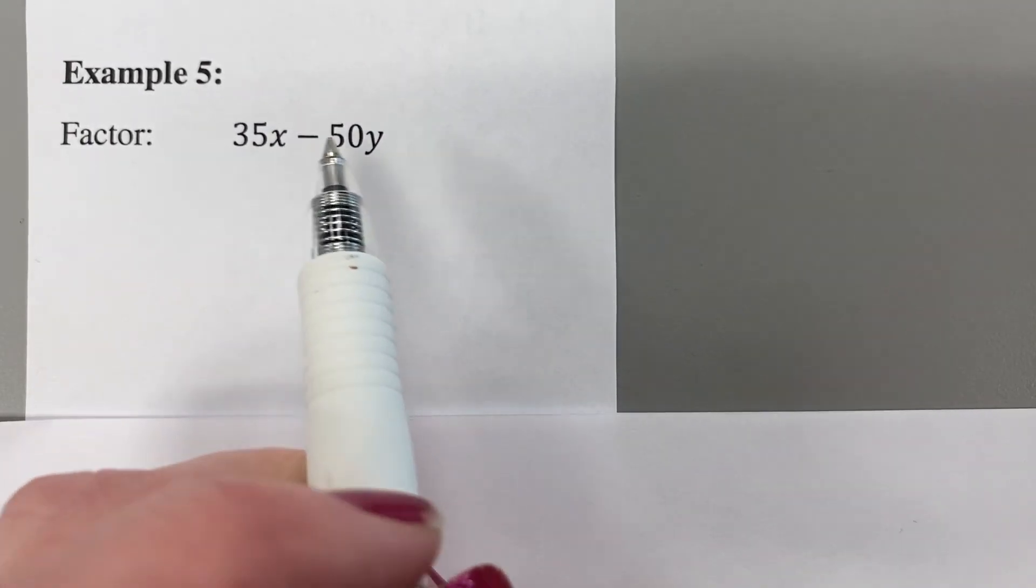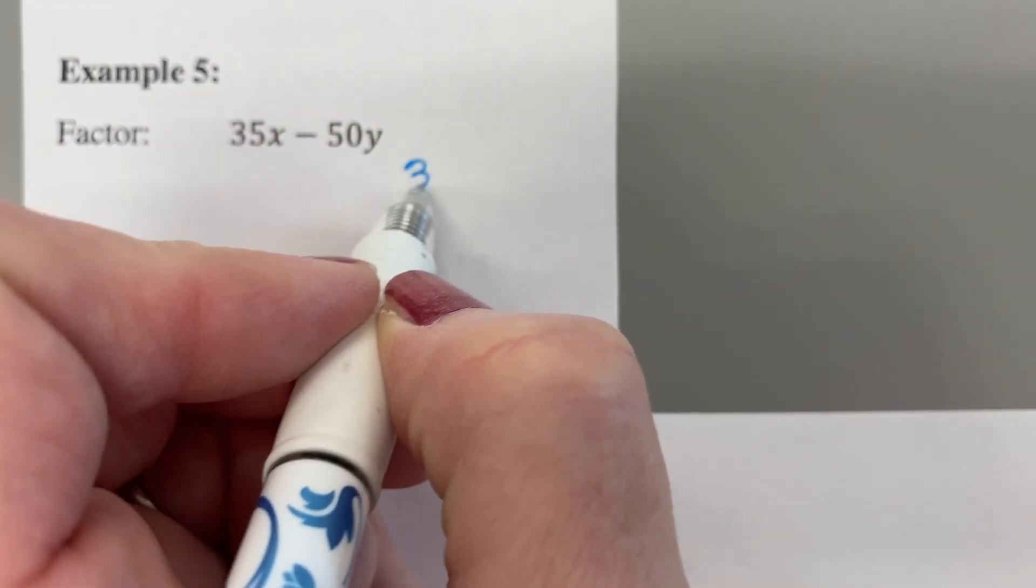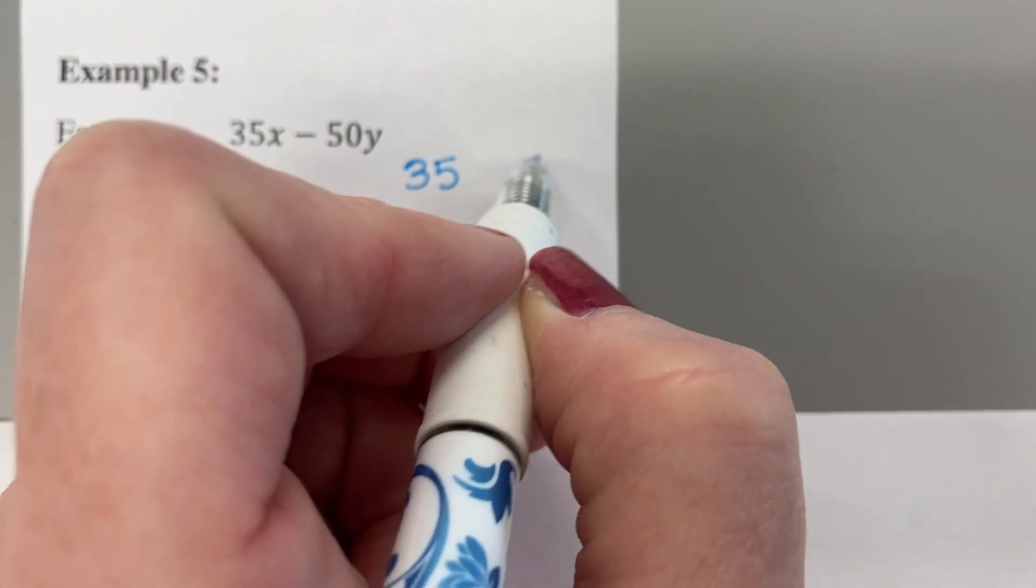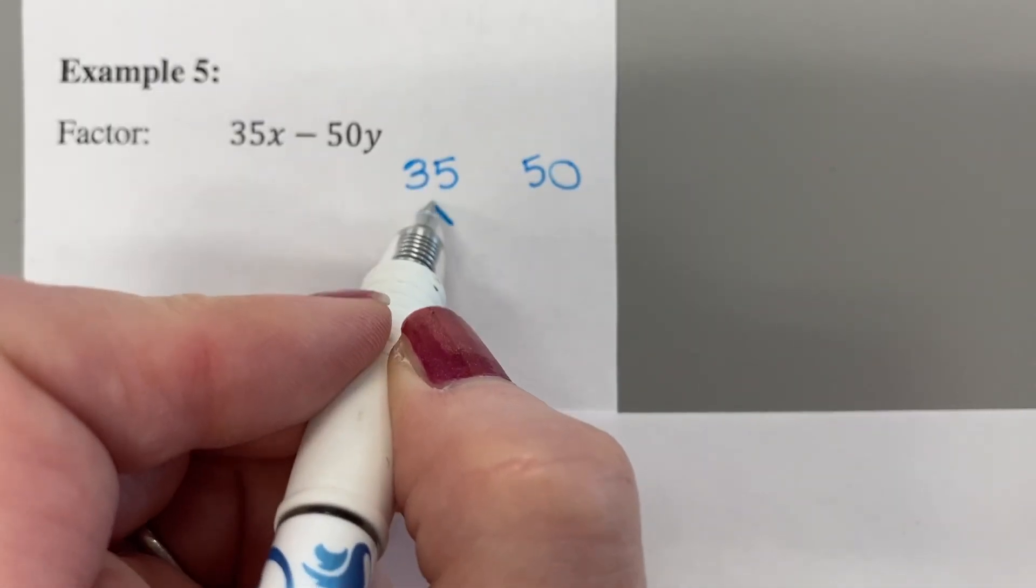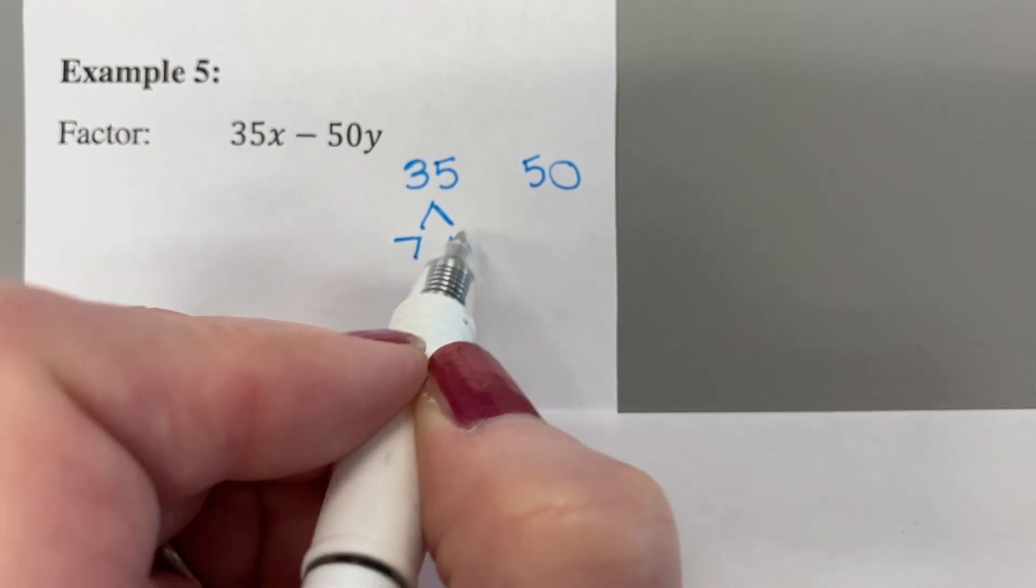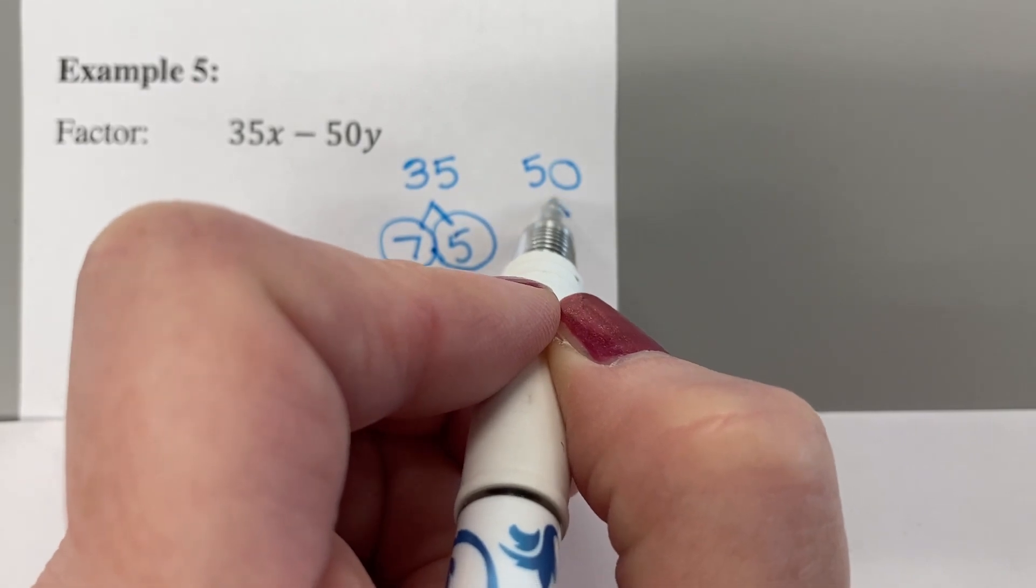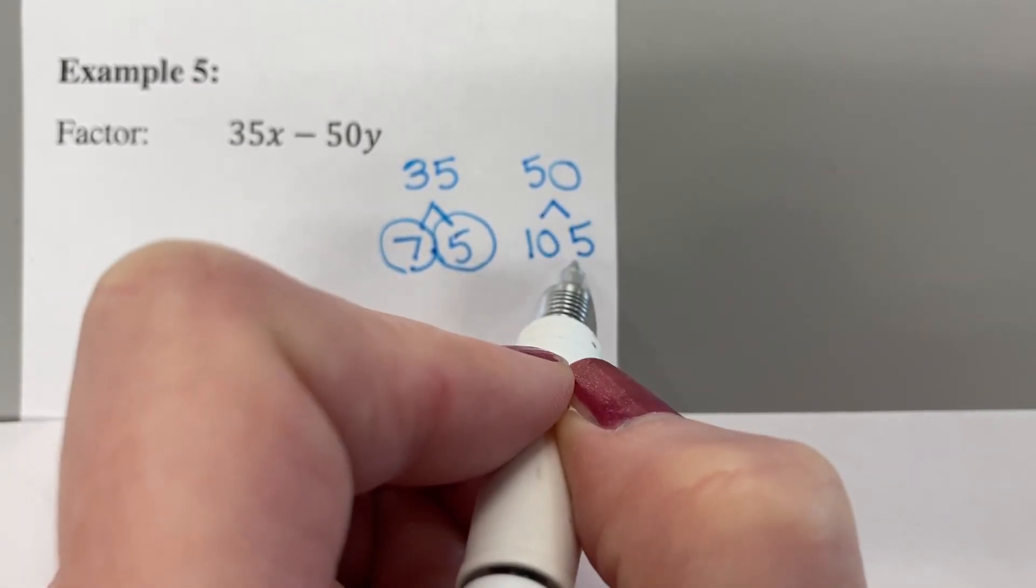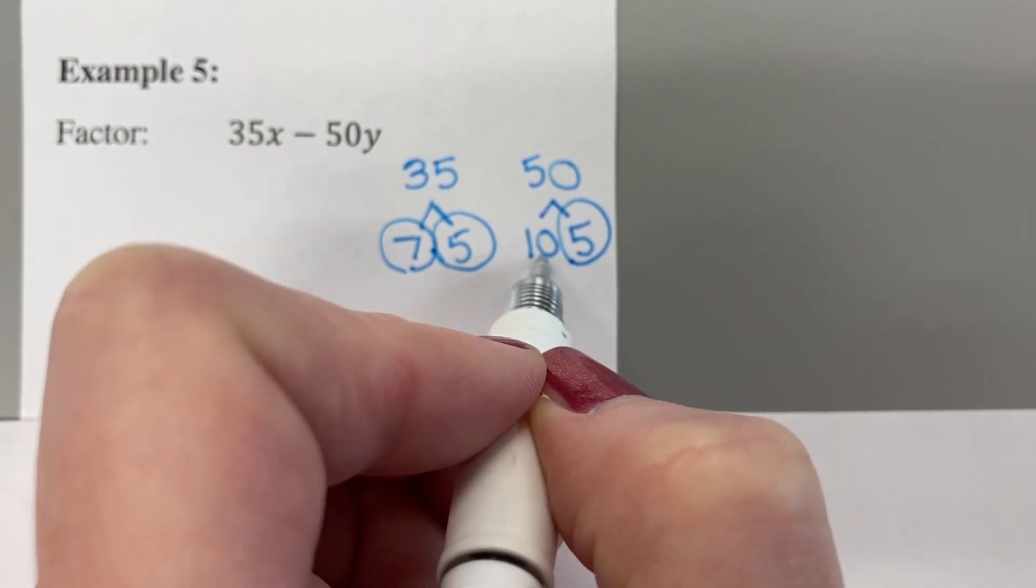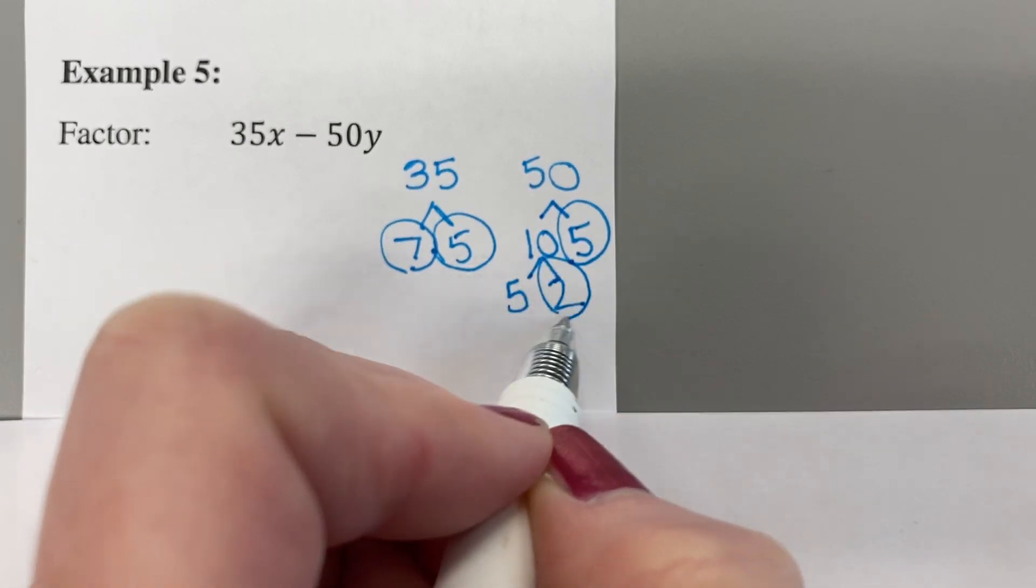We're doing factoring 35x minus 50y. So let's go ahead and find our GCF of a 35 and a 50. So for the 35, we know 7 times 5 is 35. And those are both prime. 50, let's see. We could do 10 times 5. Of course, the 5 is prime. But then the 10 can keep going to 5 and 2. And now they're both prime.